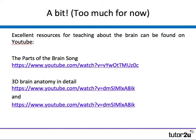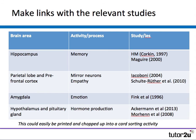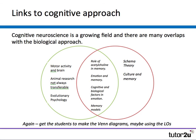There are excellent resources on YouTube for teaching about the brain, and exercises you can do. This table could easily be printed and chopped up into a card-sorting activity using only studies published by Tutor2U. You can make links with relevant studies and relevant processes. When you finish teaching the biological approach, there's a nice link to the cognitive approach — get students to make Venn diagrams using the learning outcomes from each approach and decide where the overlap is.